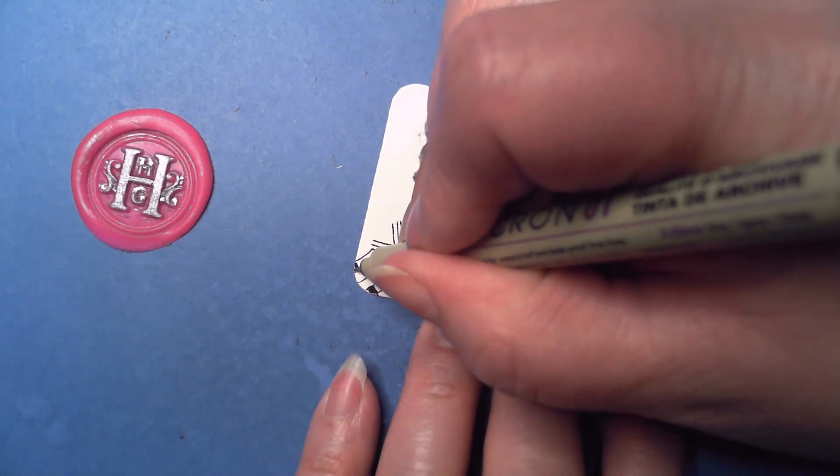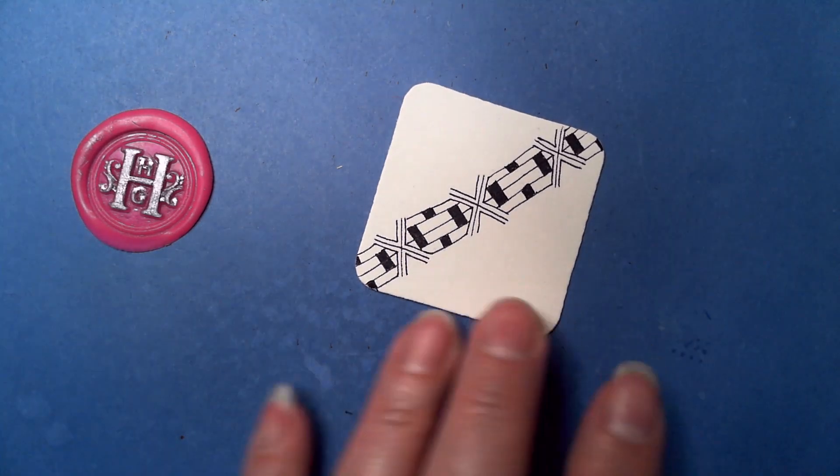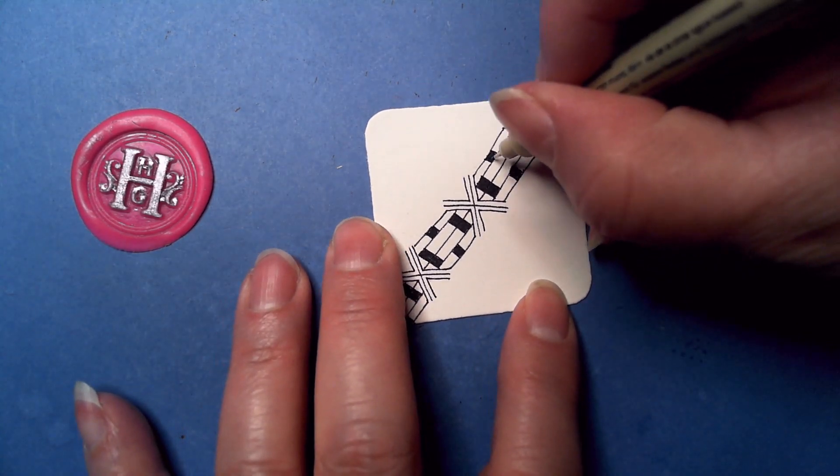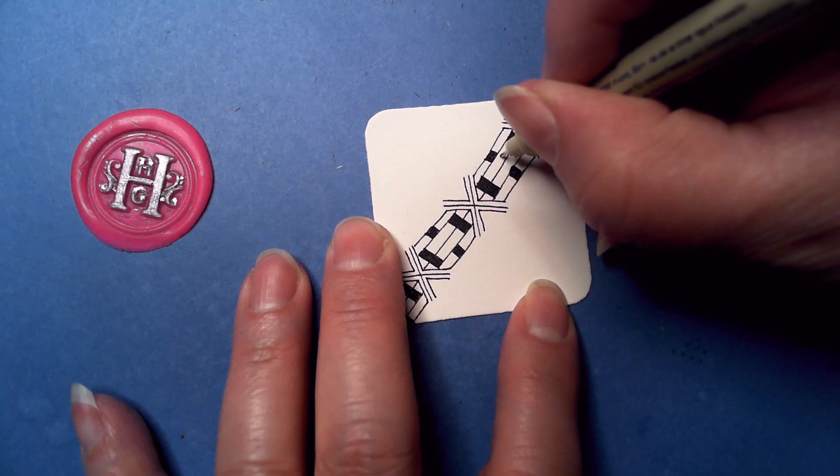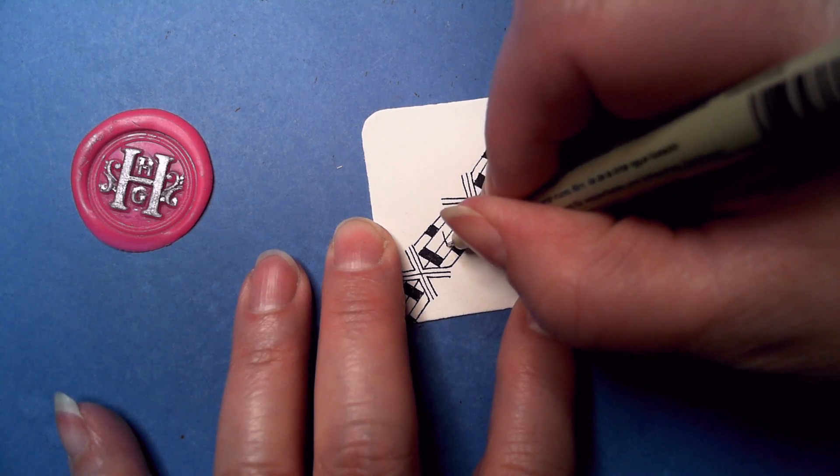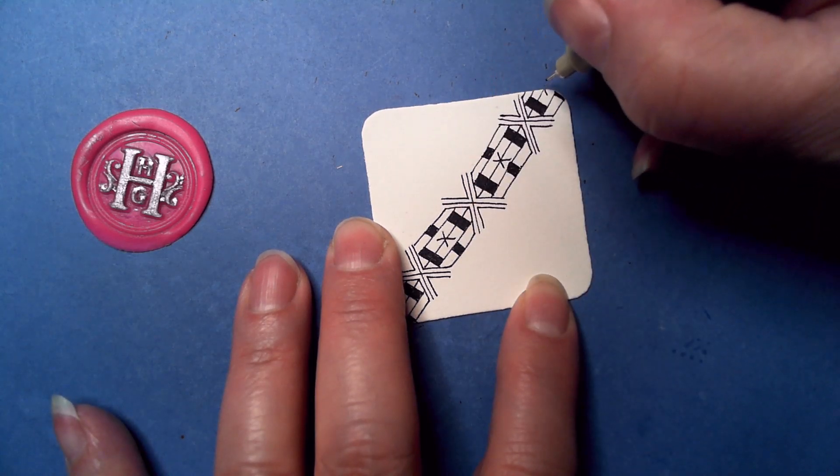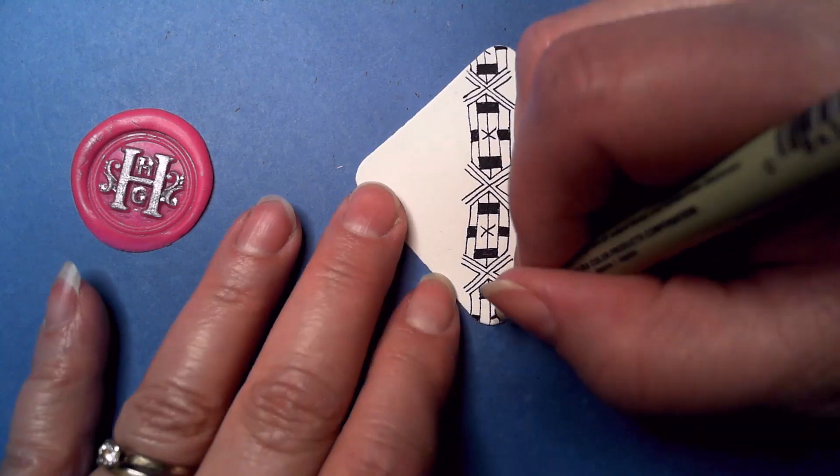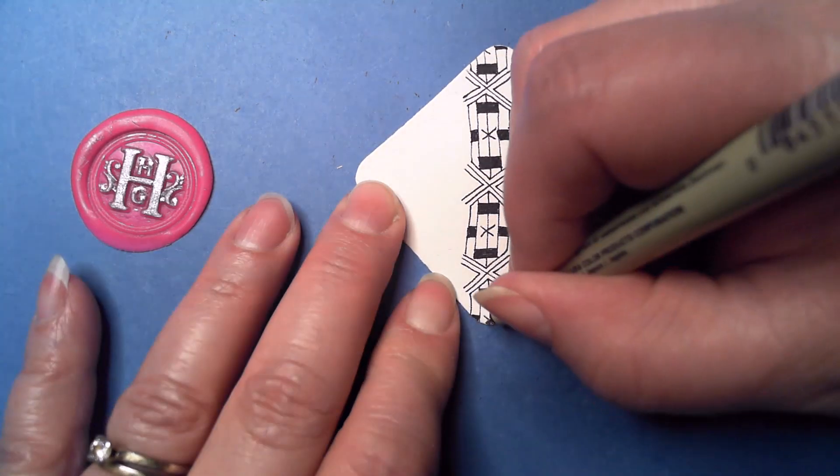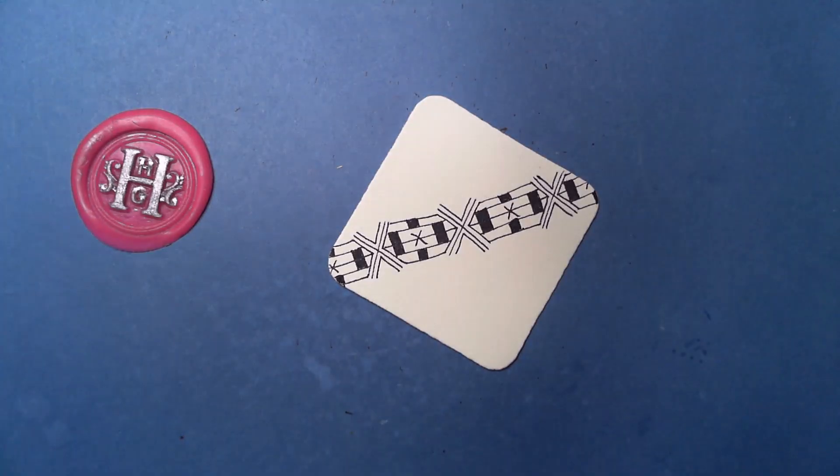Once we have that, in the very middle we're just going to put an additional little free-floating X like this, which is nice because it kind of ties everything all together. This one would have a little partial there, and this one too. That is essentially it.